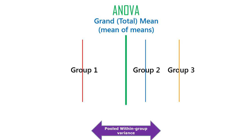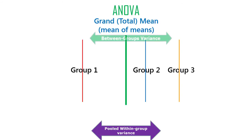Then we come up with an estimate of the variability among just the means. We treat each mean as a single observation point. We come up with the grand mean — the mean of the means — which is really just the mean of all the data points together as if you took away all the group divisions and divided by the total number of data points. It's the mean of the entire study: the mean of the means, the total mean, the grand mean. We look at deviations from that, and that tells us about between-groups variance — the variance between the means in your sample.